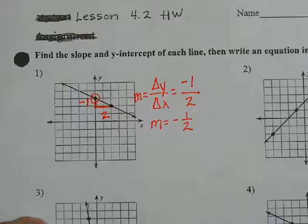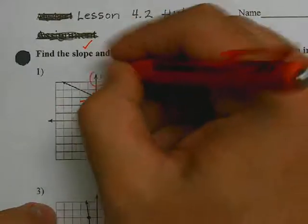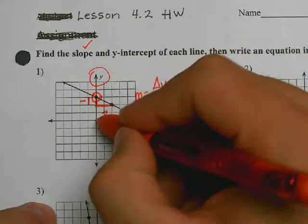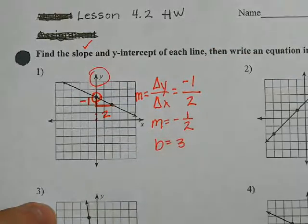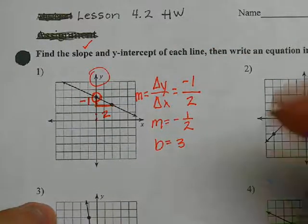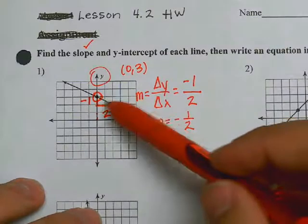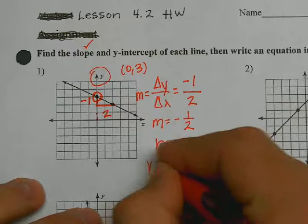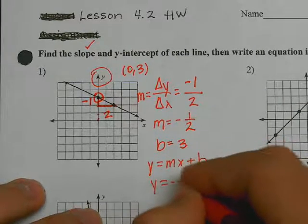So that's your slope — we found the slope. Now we find the y-intercept. The y-intercept is where the line intersects the y-axis. Where does this line intersect the y-axis? It intersects right here. I'm going to count up from the origin: one, two, three. So my b is three. It's the coordinate zero, comma three for the y-intercept, but the y-intercept value where it intersects is just three. So now I have m and b.